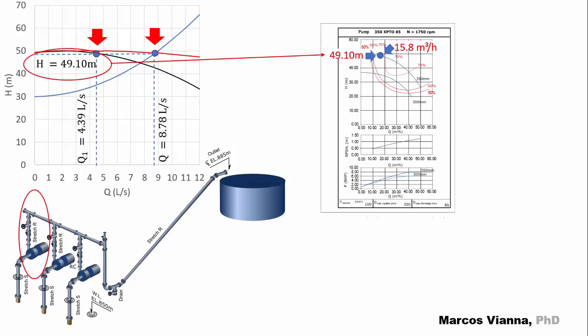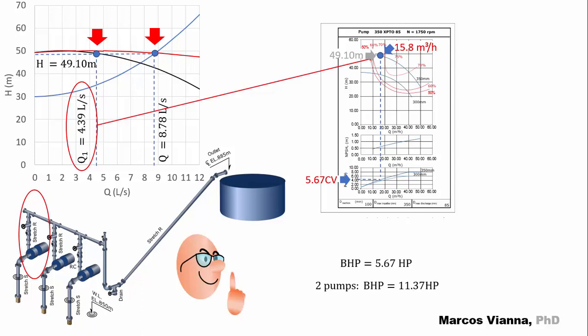Here is the operating point in the pump chart, the flow and the manometric head. From this point, we can find the power of each point. Notice that the power of the installation will be twice the power of each pump. We can find the NPSHR and the efficiency too.